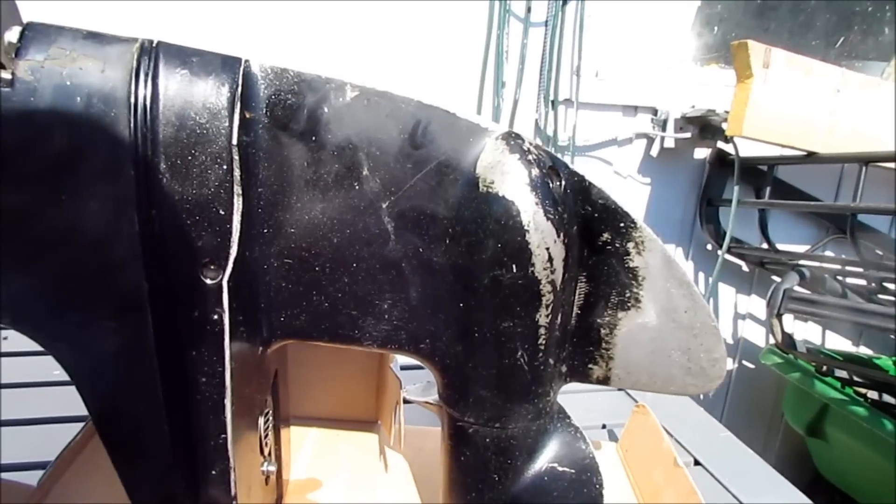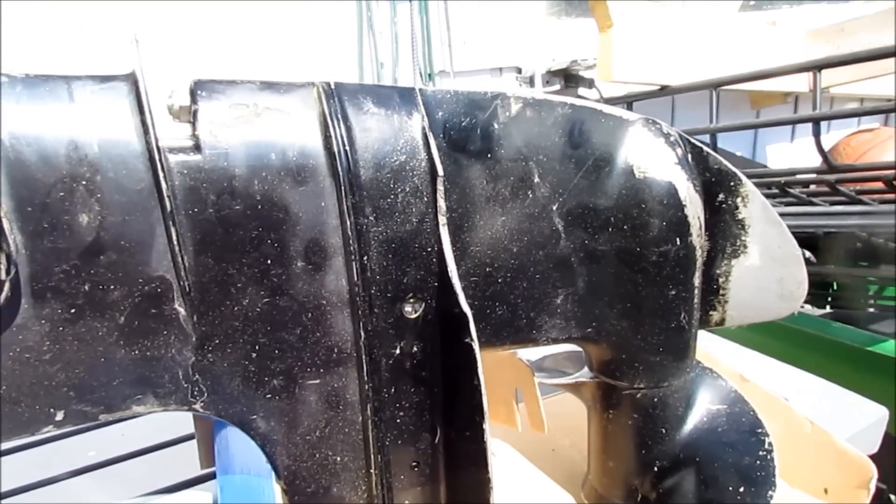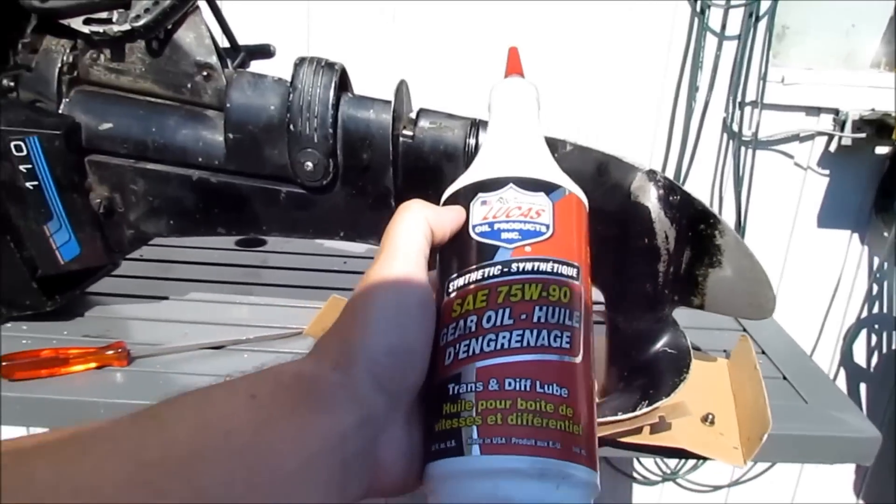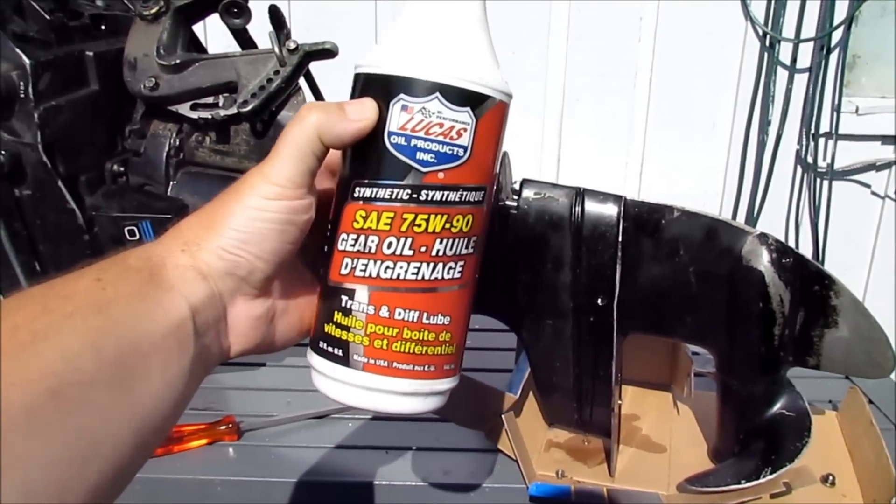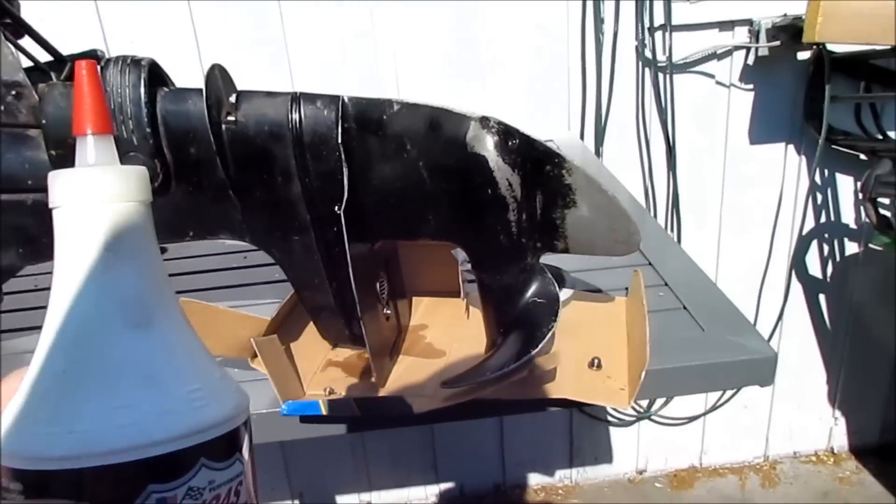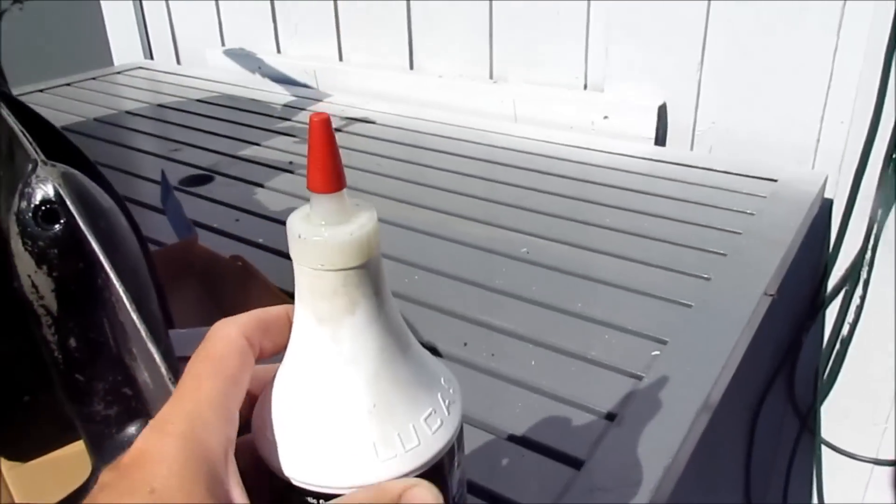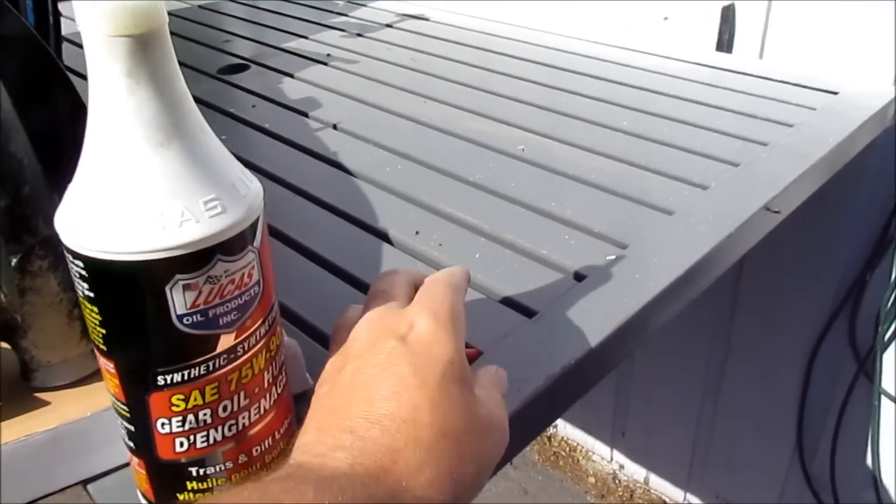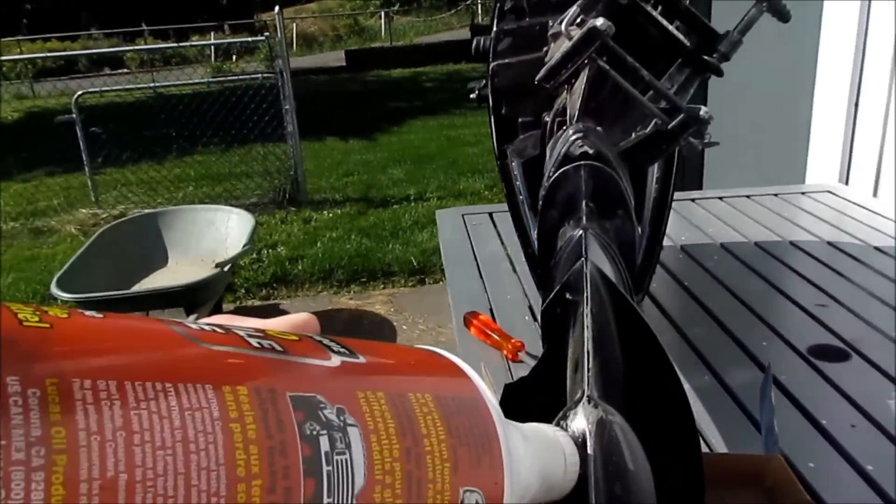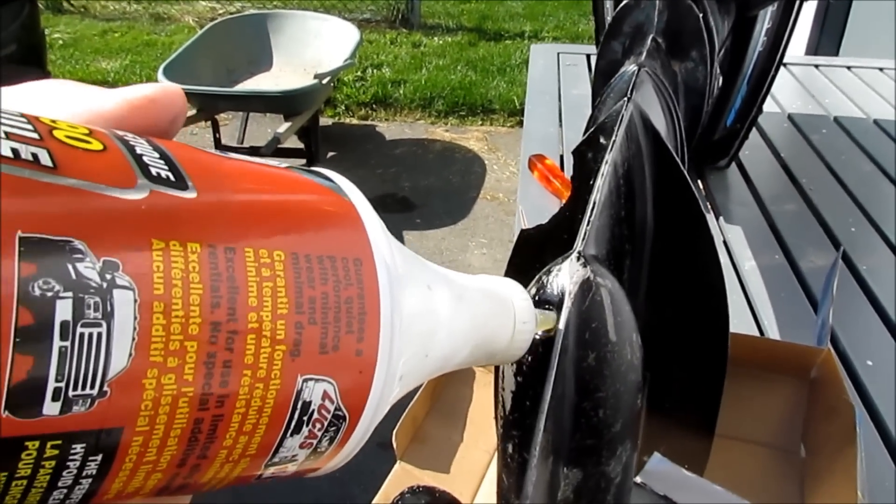So basically pull both plugs. A little bit will come out of the top hole here. Then I take a good quality gear oil - that's what I use on this one, synthetic oil - and it's got the nice tip on the top. Cut your tip to fit and then fill it through the bottom until it comes up the top.